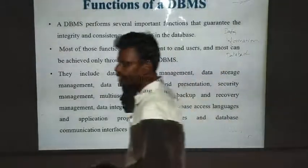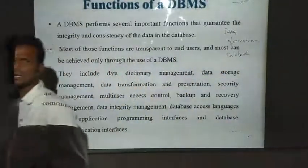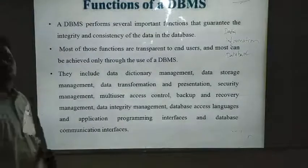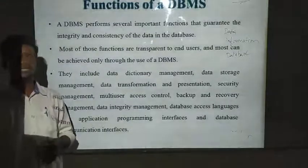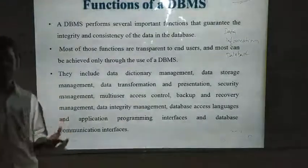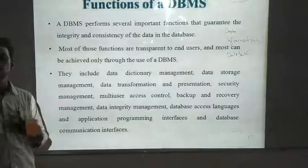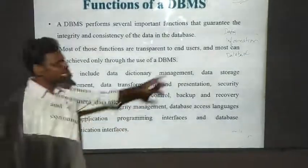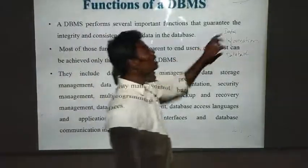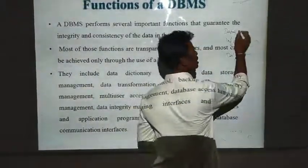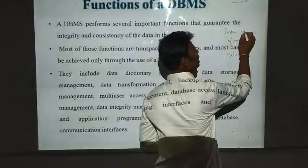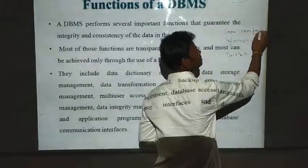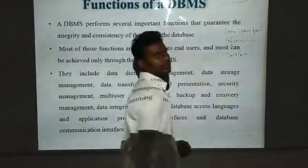What is the data? Data is nothing but a collection of raw facts. Raw facts means it can be anything like text, numbers, images, and so on. That is nothing but your data — a collection of raw facts are called as data.